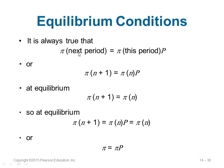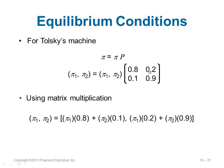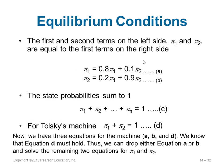To calculate the steady state, represent pi equals pi P as pi 1 comma pi 2 equals pi 1 comma pi 2 times P. Multiplying gives: pi 1 equals pi 1 times 0.8 plus 0.1 times pi 2. Similarly you can make two equations. We also know the sum of all probabilities equals 1, so pi 1 plus pi 2 equals 1. We now have three equations; replace pi 2 using pi 1 and get the values.